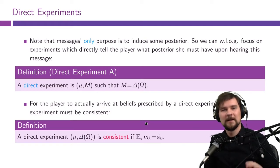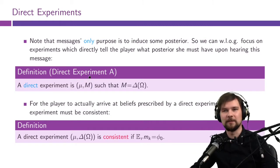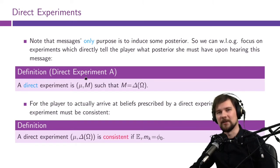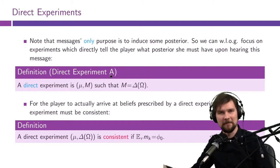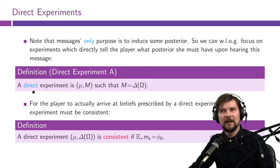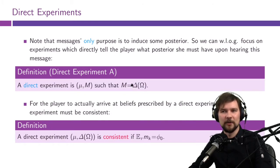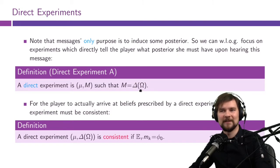What we can say is that instead of searching over all possible sets of messages, we can focus on messages which tell our agents exactly what to think. Obviously there will be conditions such that the players will find it optimal or credible to believe what we want them to believe — similar to the IC conditions in mechanism design. Let us introduce this notion of direct experiments. A direct experiment is such that its set of messages is given by the set of possible posteriors — the set of possible beliefs over the state space Ω.